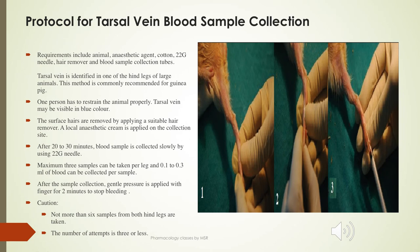The tarsal vein method uses a 22-gauge needle and hair remover cream. The tarsal vein in the hind legs of the animal appears bluish after hair removal. A local anesthetic cream is applied and after 30 minutes, the needle is inserted into the tarsal vein. From each leg, 0.3 ml of blood per sample can be collected. A maximum of two to three attempts is recommended, and hair removal and local anesthetic are mandatory for this method.